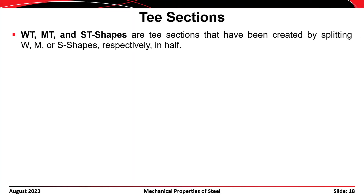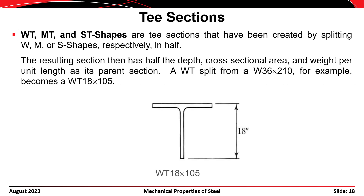T-shaped sections are also used with some regularity in steel buildings. T's are formed by splitting or cutting in half a parent I-shape—a W-shape, M-shape, or S-shape—along its length at the mid-depth of the web, yielding a T-shape. For example, taking a W36 by 210 and cutting it in half gives a WT18 by 105: 36 divided by 2 is 18, and 210 divided by 2 is 105.